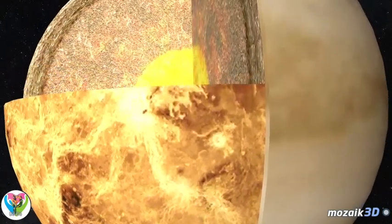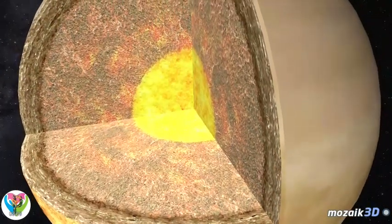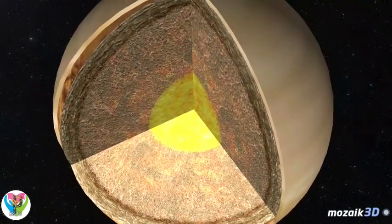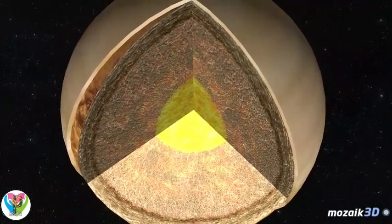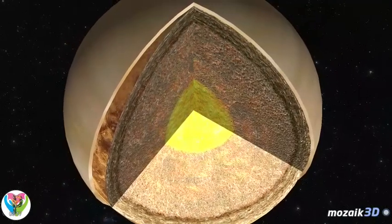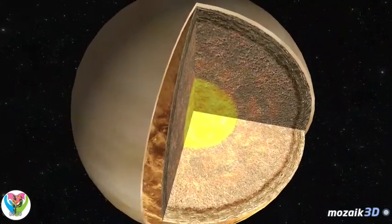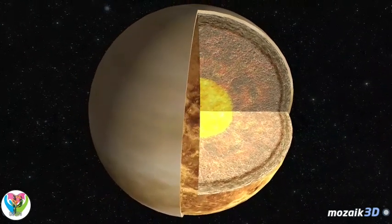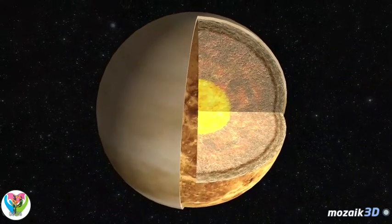Many astronomers believe that long ago there was water on the surface of Venus, but due to the increasing brightness of the Sun, which led to an increase of temperature, oceans gradually evaporated, which in turn led to a growing amount of water vapor in the atmosphere. Since water vapor absorbs infrared radiation, the greenhouse effect became more powerful, which further increased temperature and accelerated evaporation.